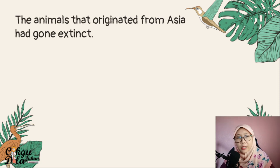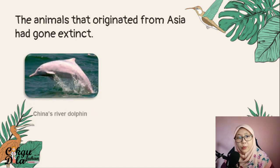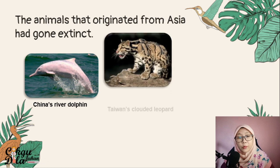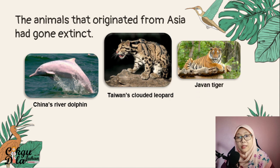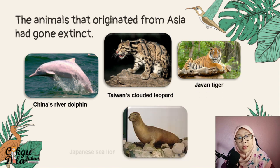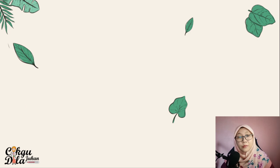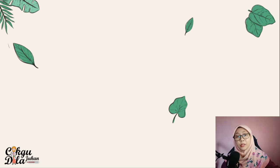Some animals that originated from Asia have also gone extinct. For example, the Chinese River Dolphin, the Taiwan Clouded Leopard, the Javan Tiger, and the Japanese Sea Lion. These are some animals from Asia that are already extinct.